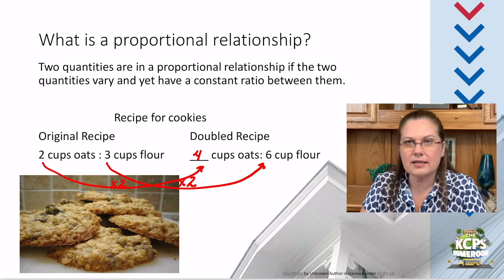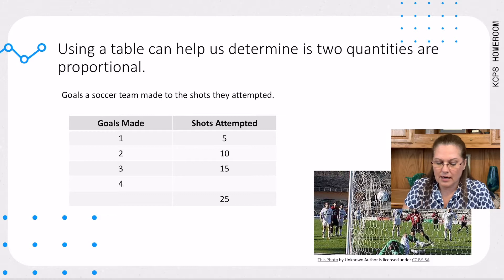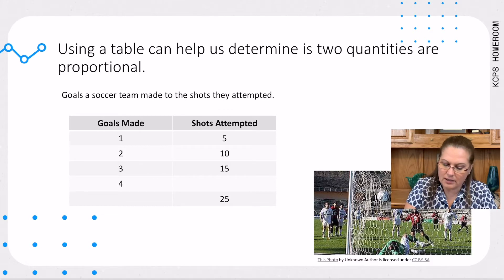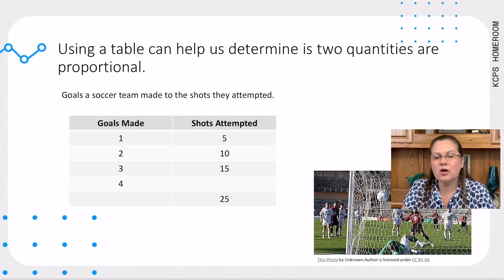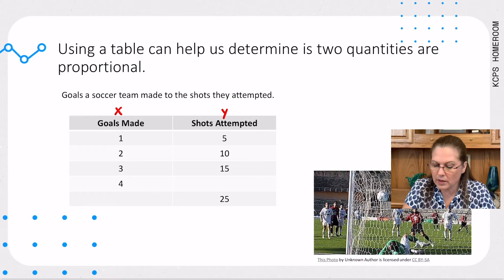Another example that you guys might be familiar with is when you play soccer. And I have a table demonstrating soccer goals to attempts. You'll notice for every one soccer goal, they make five attempts. When we're looking for a ratio, we're looking for the rate of change between our x value and our y value. And when you have a table and it's going vertically, x is always on the left, y is always on the right. We always want to say our y value to our x value. So we're going to look for shots to goals.